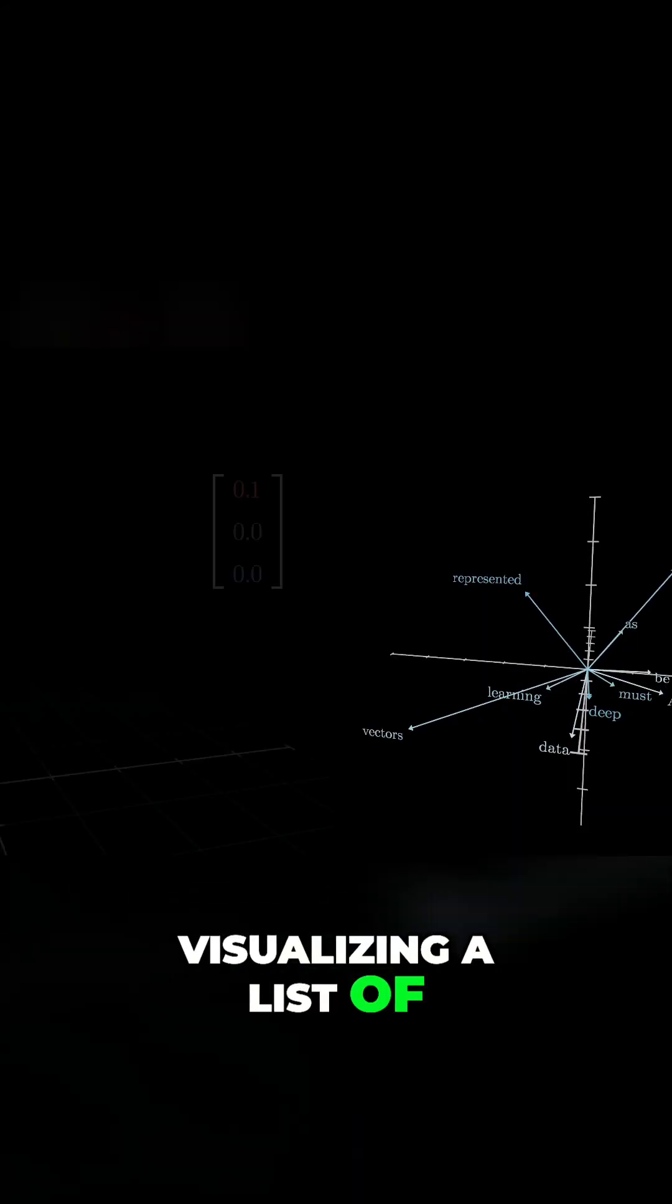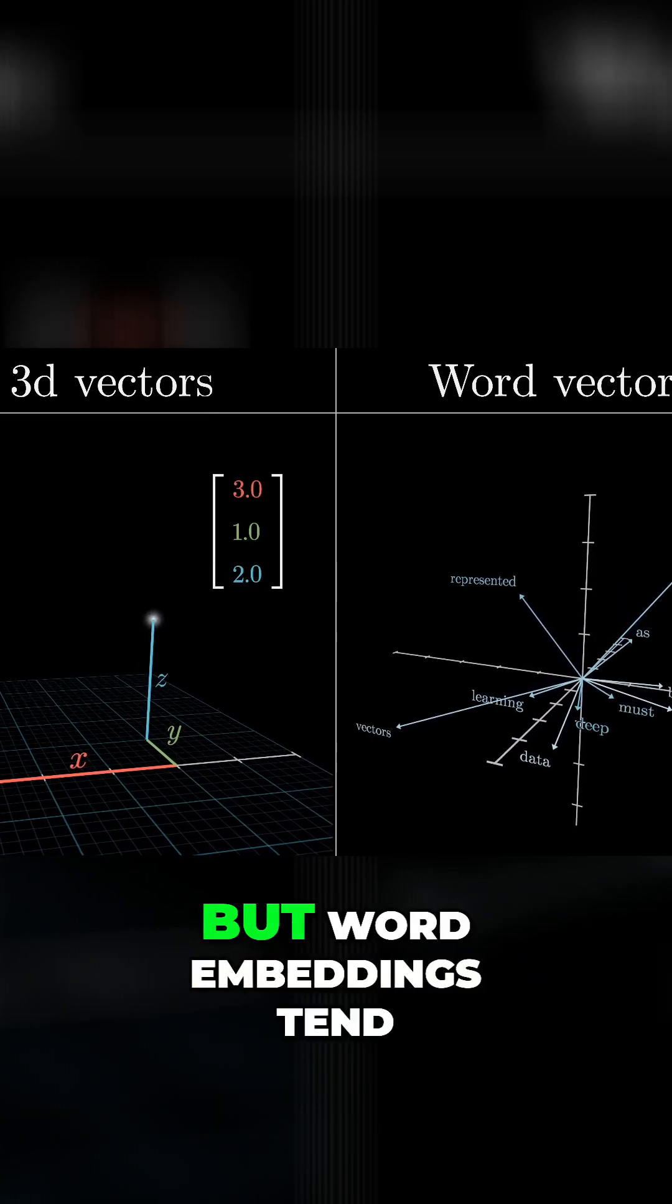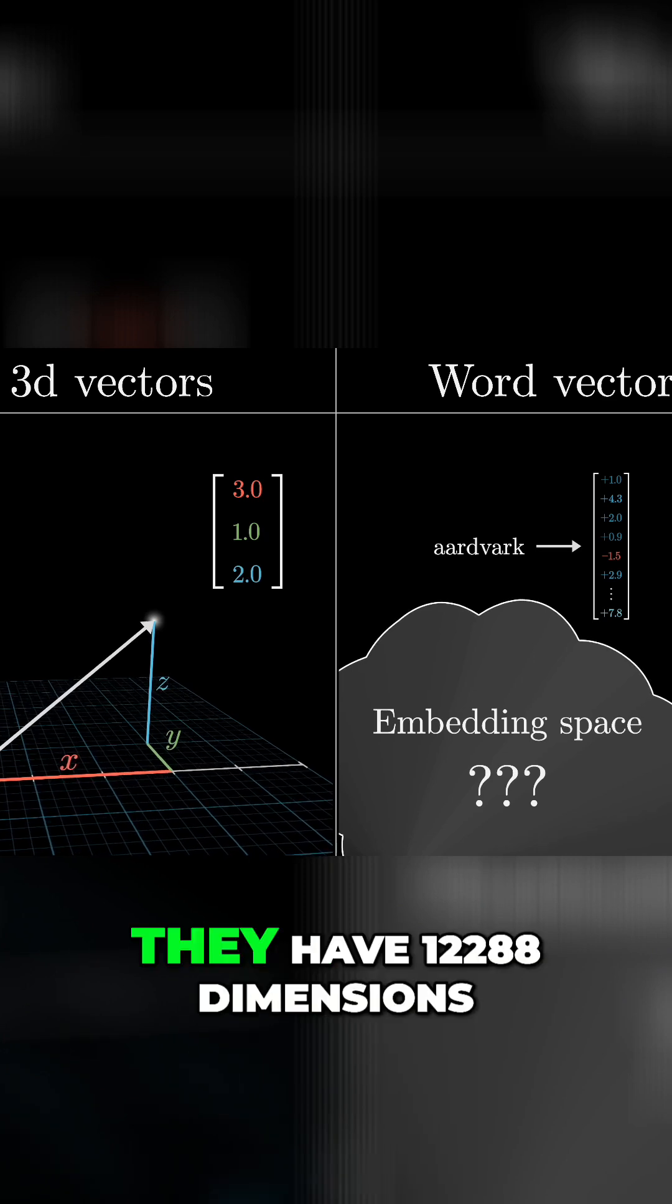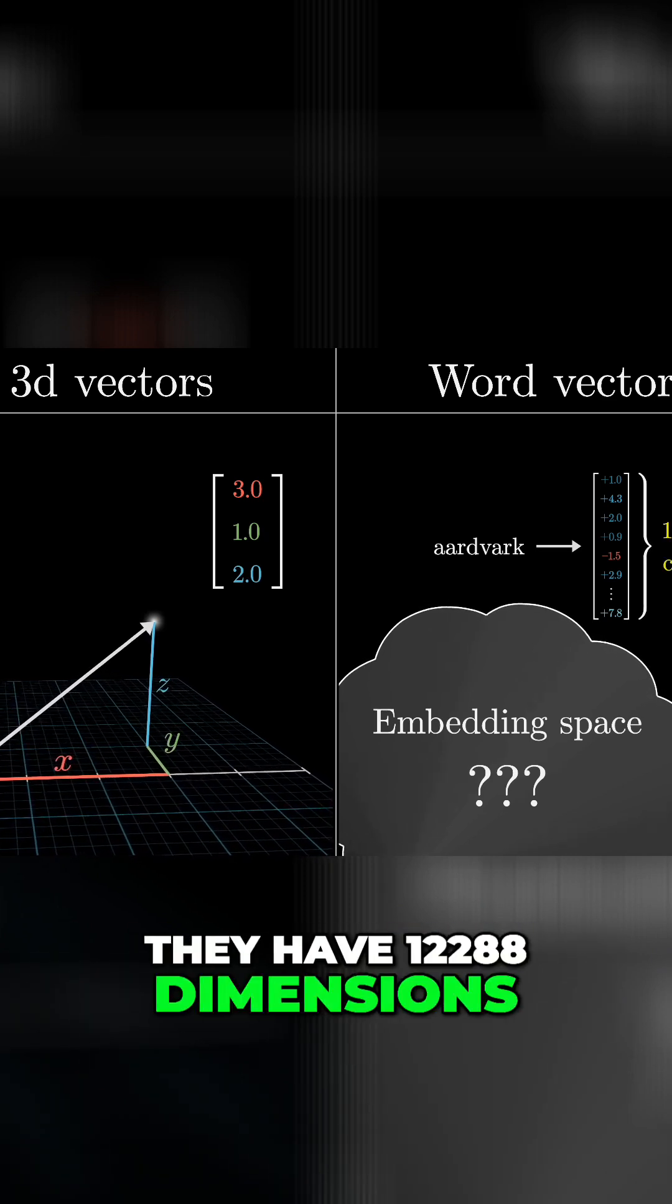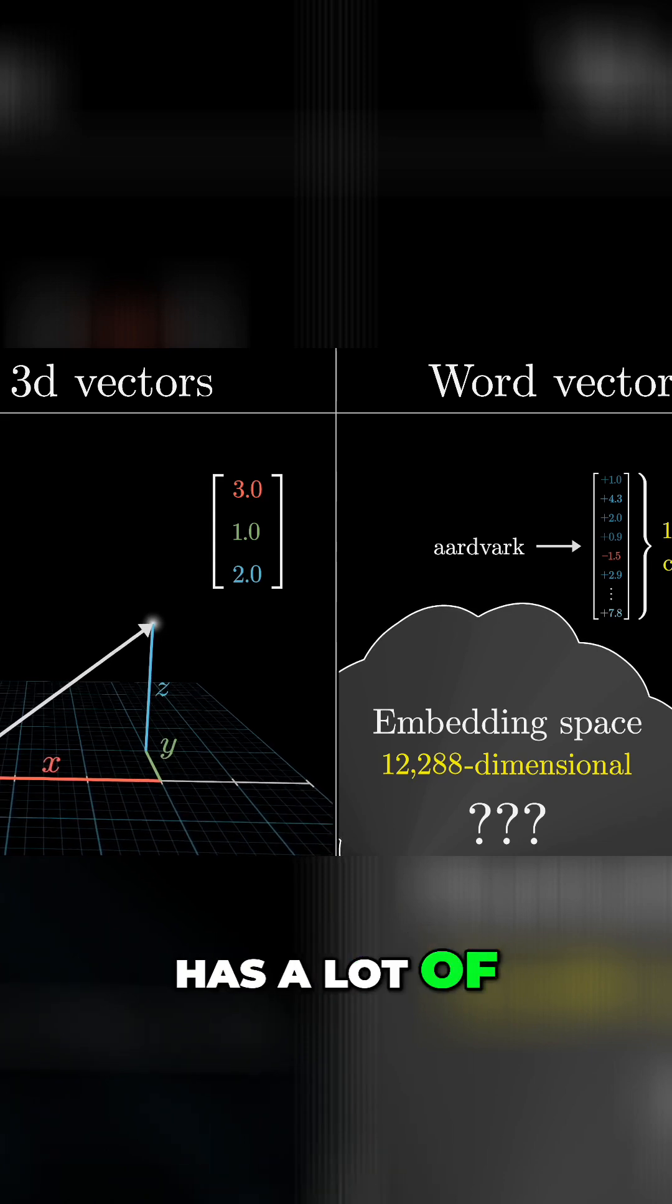Visualizing a list of three numbers as coordinates for points in 3D space would be no problem, but word embeddings tend to be much, much higher dimensional. In GPT-3, they have 12,288 dimensions, and as you'll see, it matters to work in a space that has a lot of distinct directions.